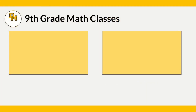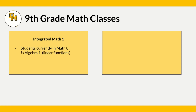Our ninth grade students have two options when it comes to math classes. The first of those options is Integrated Math 1. This class is for students who are currently in Math 8 or an on-level eighth grade math class. It is one-third Algebra 1 with a focus on linear functions, one-third geometry, and one-third statistics.